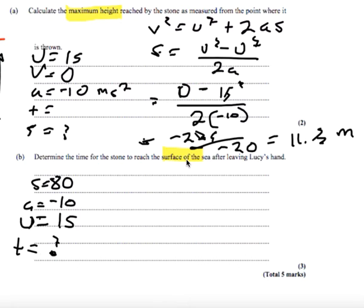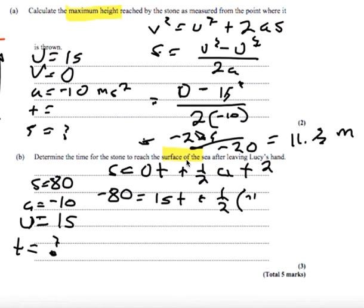So what equation of motion has these four quantities? That's going to be s equals ut plus one half a t squared. We'll try and solve this for t. We know s is negative 80. U is 15.